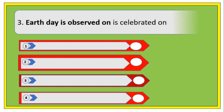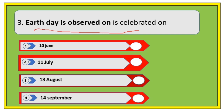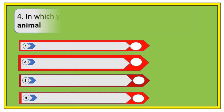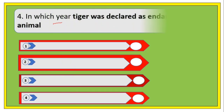World Population Day is observed on which date? Options are 10th June, 11th July, 13th August, and 14th September. The right answer is 11th July.